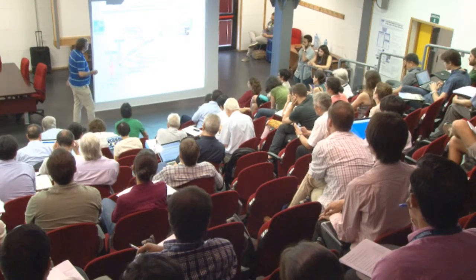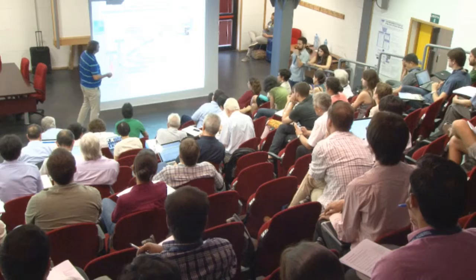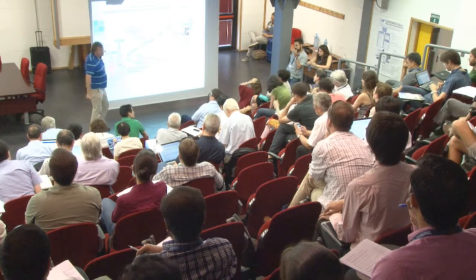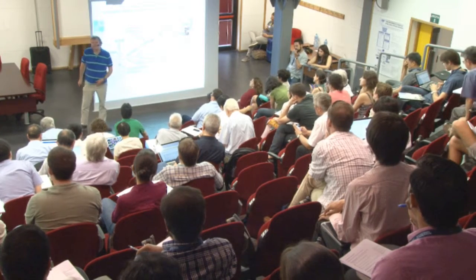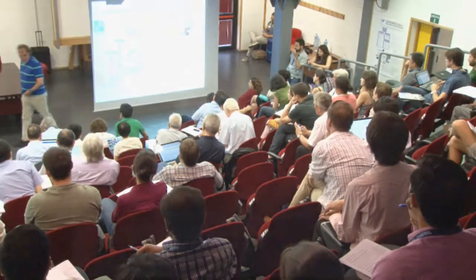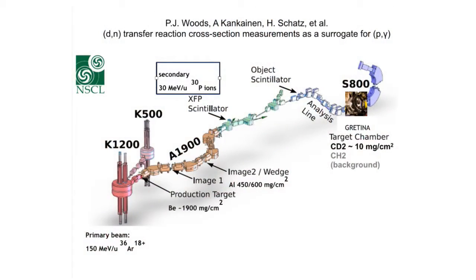These were impinged on a target surrounded by something called GRETINA. GRETINA, if you don't know it, is a gamma-ray array with a tracking capability. It's well adapted to studying experiments where you have significant Doppler shifts, as you do when you have relatively high velocities. And it has essentially 100% efficiency.